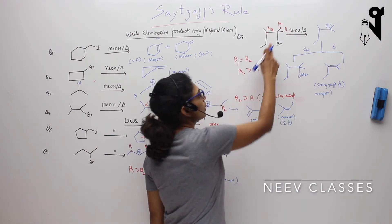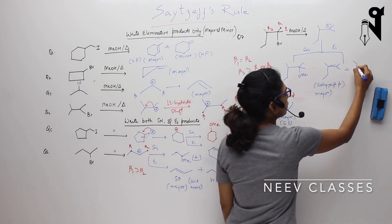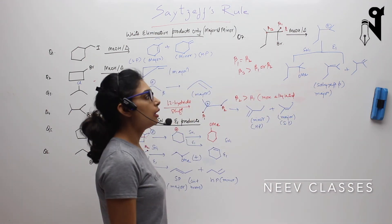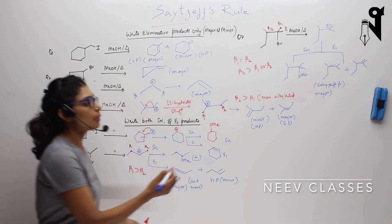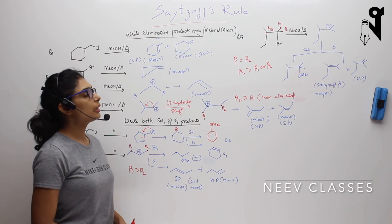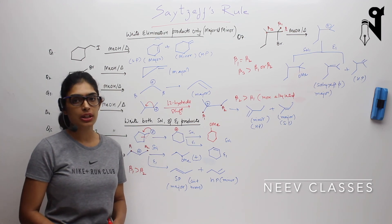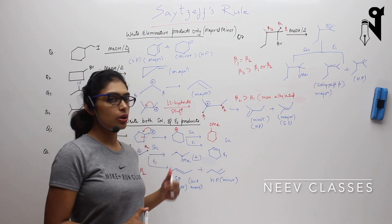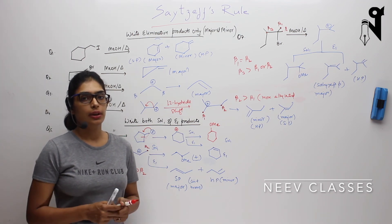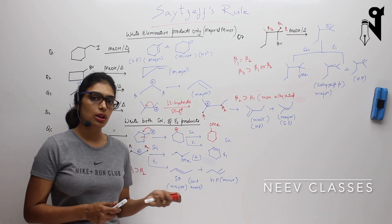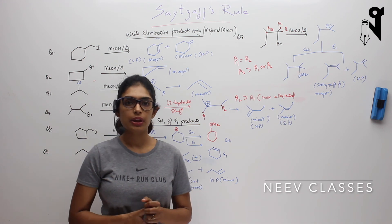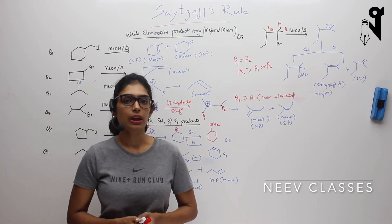I hope you have understood the solution of all the questions. This is how you will be getting a question for elimination and you will have to find out the major products. In most cases in exams, they will only be bothered about the major product formed rather than all products. As we have already discussed, E1 will always follow the Zaitsev rule to get the major product. SN1 products will also be forming — depending upon the temperature given, we will decide whether the SN1 product is more or the elimination product is more. If the elimination product is more, then the Zaitsev product will be in the major quantities.